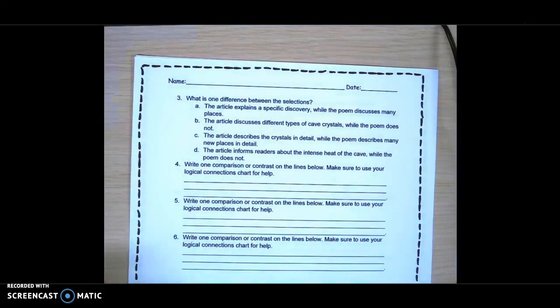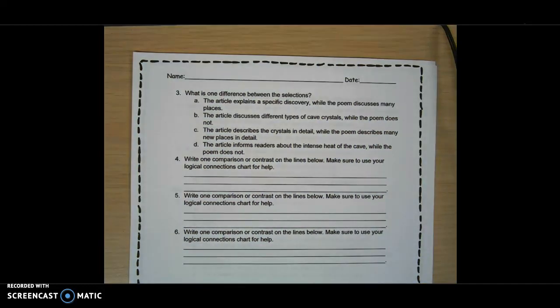3. What is one difference between the selections? A. The article explains a specific discovery, while the poem discusses many places. B. The article discusses different types of cave crystals, while the poem does not. C. The article describes the crystals in detail, while the poem describes many new places in detail. Or D. The article informs readers about the intense heat of the cave, while the poem does not.